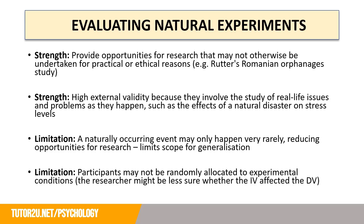A strength of natural experiments is they provide opportunities for research that may not otherwise be undertaken for practical or ethical reasons. Consider Rutter's Romanian orphanages study — this was a natural experiment because the children were orphans; it wasn't manipulated by the researcher. The age of adoption was an IV already set. Another strength is high external validity, as they involve the study of real-life issues such as the effects of a natural disaster on stress levels, where the IV of before and after occurs naturally.